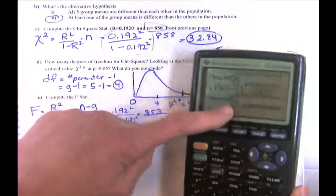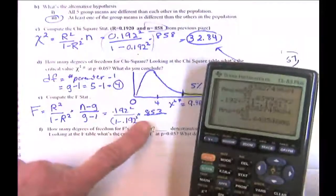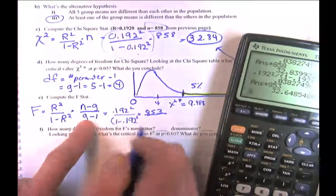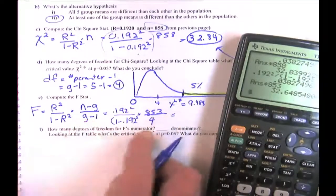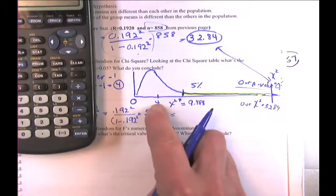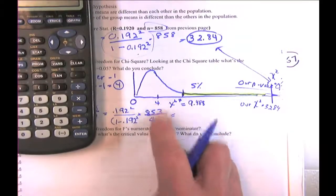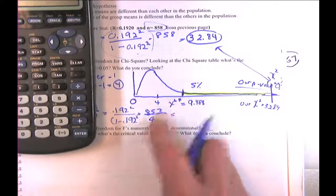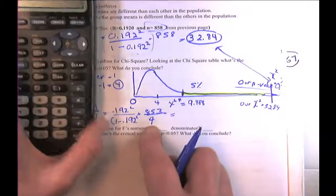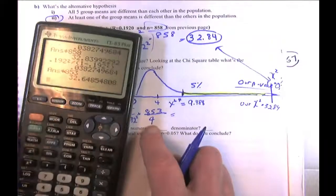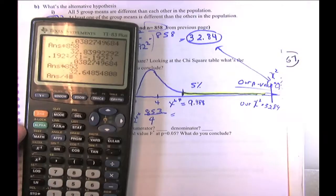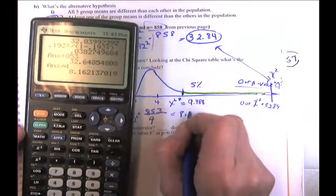The big difference is that we also divide by g minus 1, which is 4. This makes our F-curve centered around 1 instead of around 4 like chi-square. That's convenient — you can always think 'it's centered at 1.' Dividing by 4 gives us 8.16.